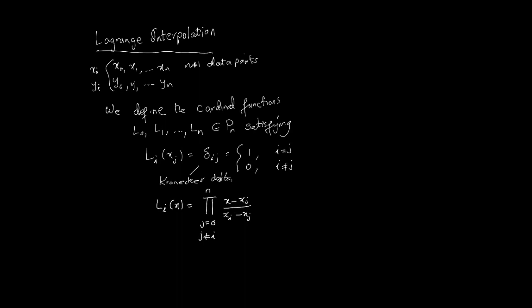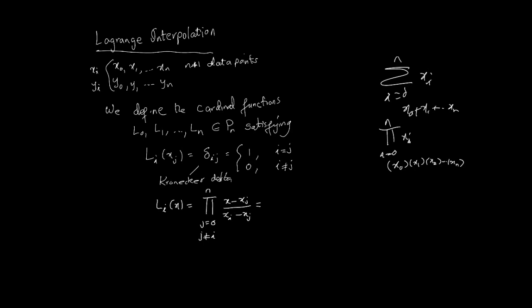Now let's actually define the functions that satisfy this property. In case you're unfamiliar with the big Pi notation, big Pi is to multiplication what sigma is to addition. So sigma of xi from i=0 to n means x0 + x1 + ... + xn. When we say Pi from i=0 to n of xi, it means x0 × x1 × x2 × ... × xn. So when we use Pi, multiplication is going on.